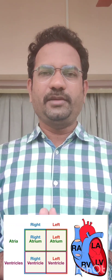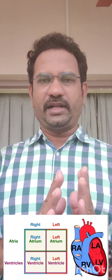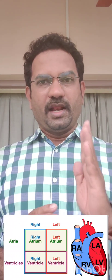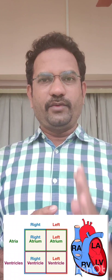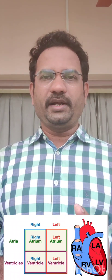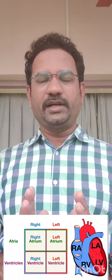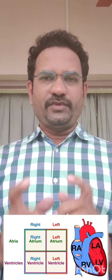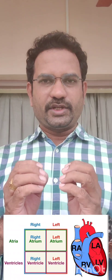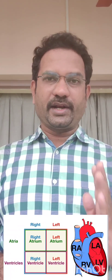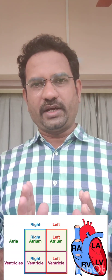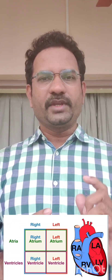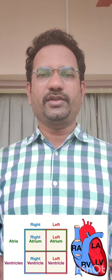Physiologically, heart can be classified as left half and right half — left heart and right heart. Left atria and ventricle contain oxygenated blood, whereas right atria and ventricle contain deoxygenated blood. This is why some textbooks show the left part of the heart red in color, whereas the right half is shown blue in color. Blue indicates deoxygenated blood; red indicates oxygenated blood.